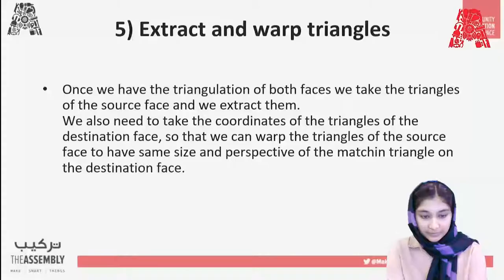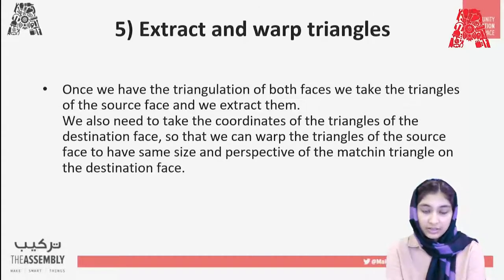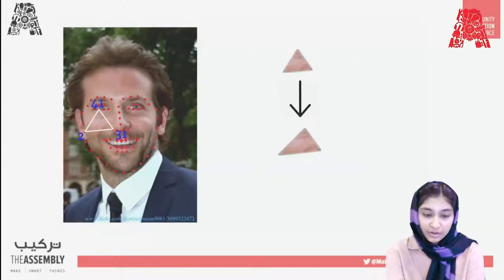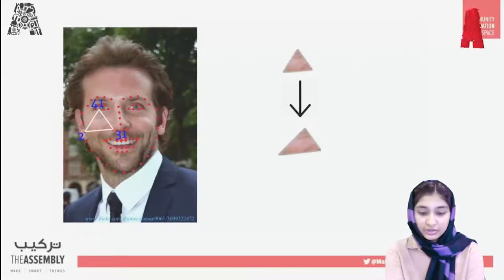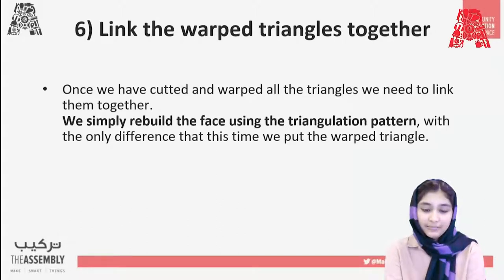Once we've done the triangulation of both faces, we take the triangles of the source face and extract them. We also need the coordinates of the triangles of the destination face so we can warp the source triangles to have the same size and perspective as the matching triangle on the destination face. We take the triangle from the source image and find the same coordinates in the destination image — it looks different since it's from the destination image, but shares the same index coordinates. Then we link the warped triangles together, rebuilding the face using the triangulation pattern.